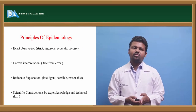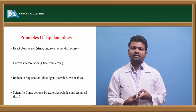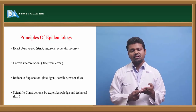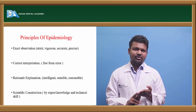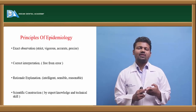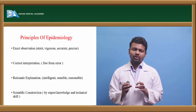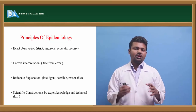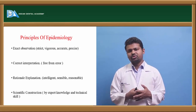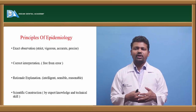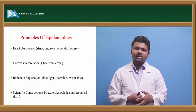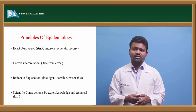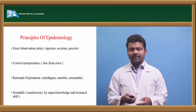The principles of epidemiology are four: first is exact observation — whatever is observed should be strict, vigorous, accurate, and precise. Second is correct interpretation — it should be free from error and free from bias. Third is rational explanation — it should be intelligent, sensible, and reasonable. Fourth is scientific construction — it should rely on expert knowledge and technical skills.